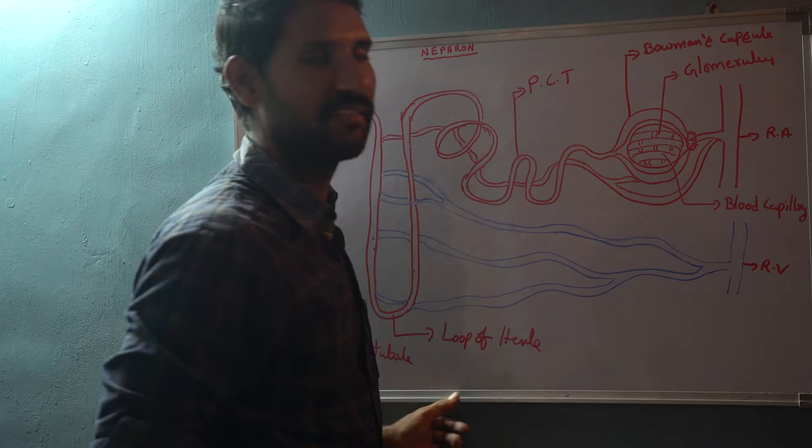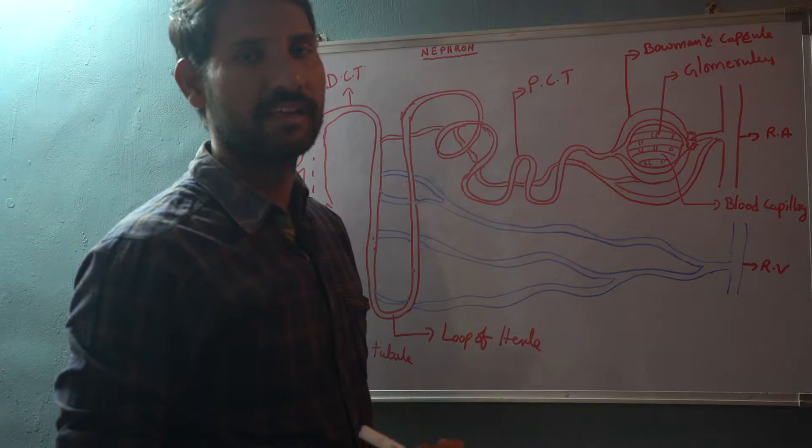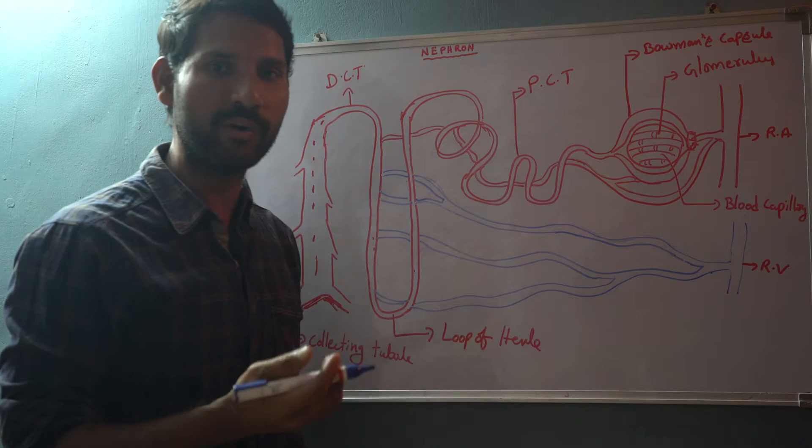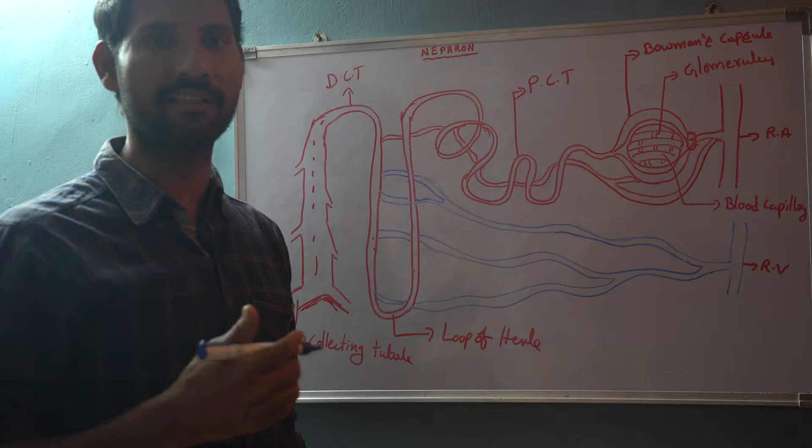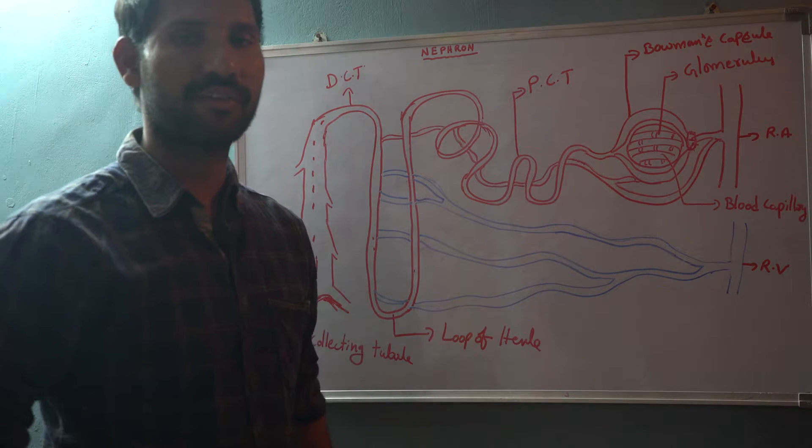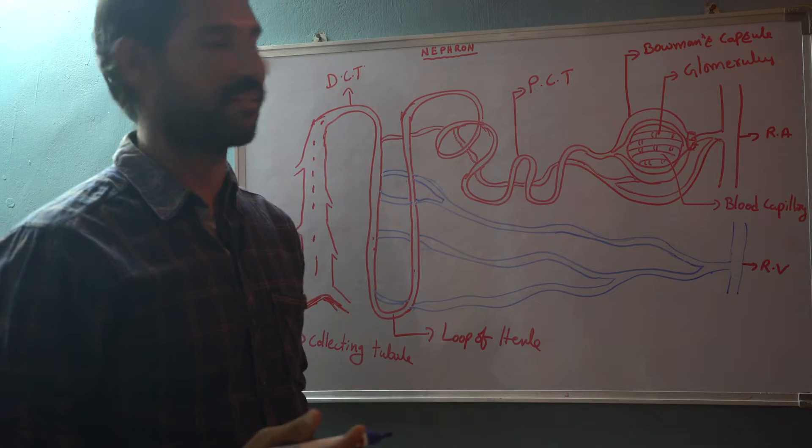In the glomerulus, filtration occurs. It is known as ultrafiltration, which means it filters only certain substances, not all substances. For example, it doesn't filter some proteins and other substances.